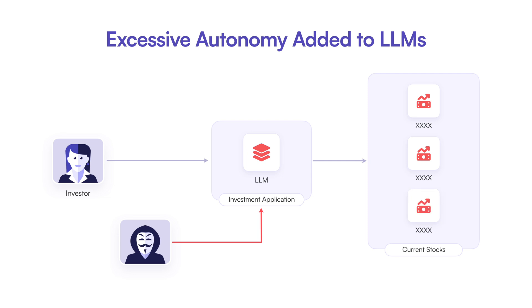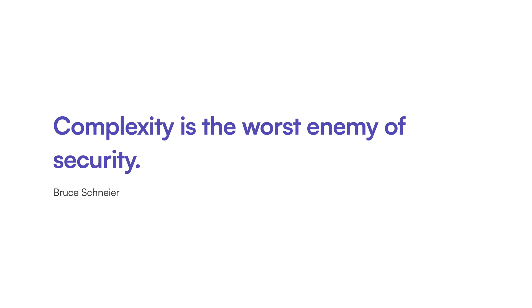Excessive autonomy can also lead to a problem known as confused deputy — when a system has legitimate permissions to perform a certain action but can be tricked or confused into performing actions that are not intended. In general, the more functionalities an application has, the more complex the system becomes, and the larger the attack surface becomes. That's a general principle observed throughout a system's design process.